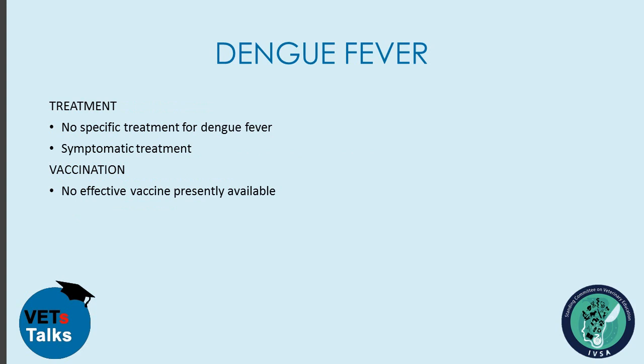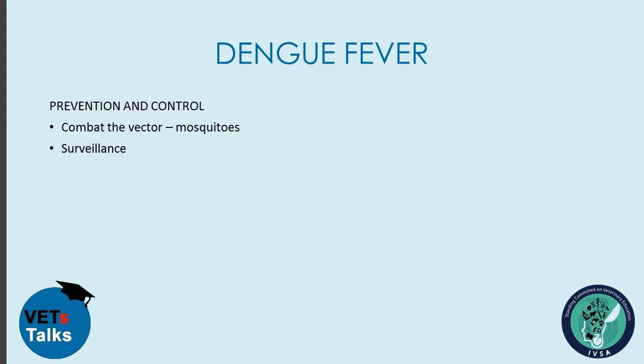There is no specific treatment for dengue fever; cases are managed symptomatically. Antibiotic agents can be administered against fever, and analgesics can be given against pain. There is also no effective vaccine presently available for dengue fever. Prevention and control can be done by combating the vector — mosquitoes — through surveillance of the disease in a particular area to identify cases and prevent others from contracting it.